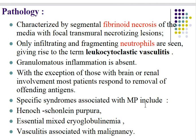Specific syndromes associated with microscopic polyangiitis include Henoch-Schönlein purpura, essential mixed cryoglobulinemia, and vasculitis associated with malignancy. All these types of inflammation at the level of small capillaries, venules, and arterioles can be demonstrated with clinical presentations consistent with microscopic polyangiitis histologically.